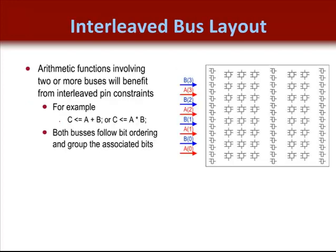In this last slide, we just wanted to give you an example of bit ordering. Two arithmetic functions have been inferred and will end up using carry logic. Since this propagates vertically, the least significant bit needs to be beneath the next most significant bit as seen here. Likewise, since we are combining the associated bits arithmetically, grouping the associated bits is wise since this will also shorten the routing delays for both buses and help assure good IO timing.